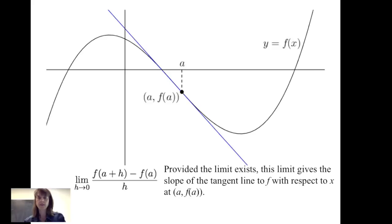Graphically, when h goes to 0, the horizontal distance between the two points (a, f(a)) and (a+h, f(a+h)) goes to 0. We get the resulting blue line, whose slope — provided that limit exists — is the limit as h goes to 0 of f(a+h) minus f(a) divided by h.